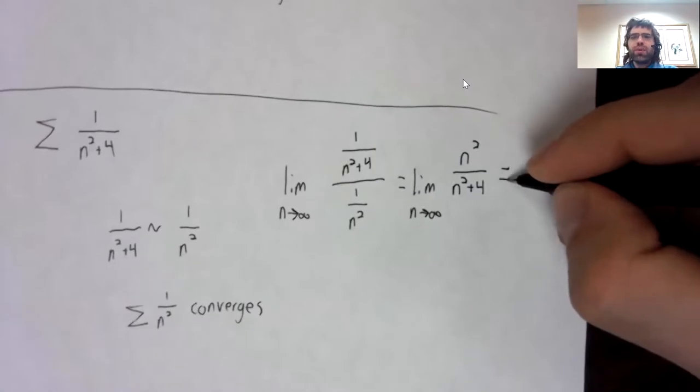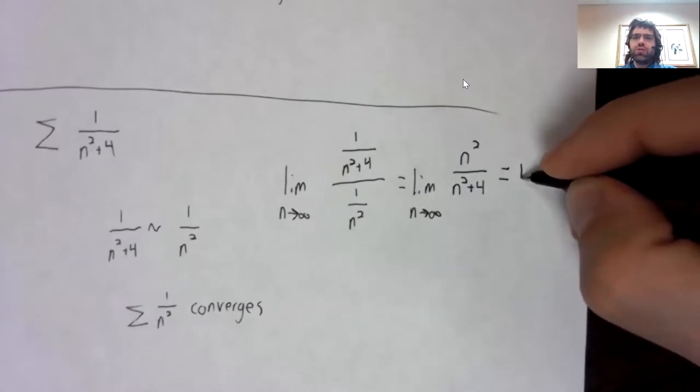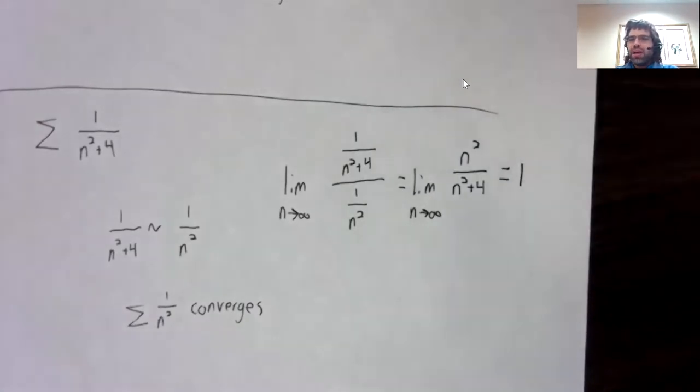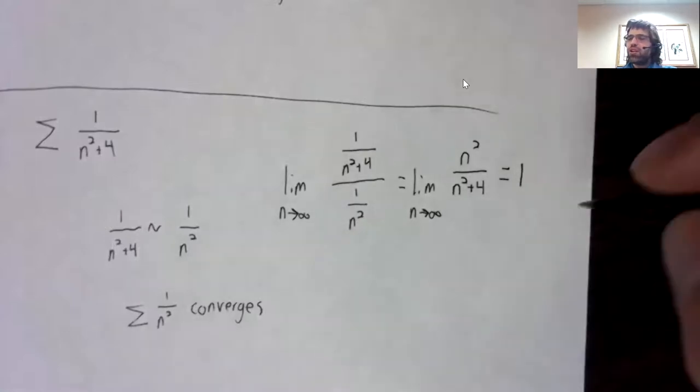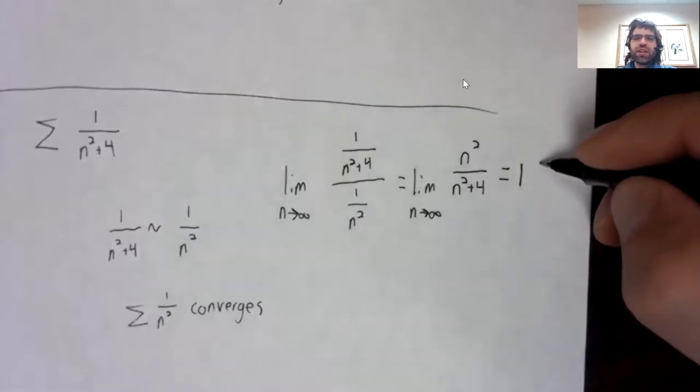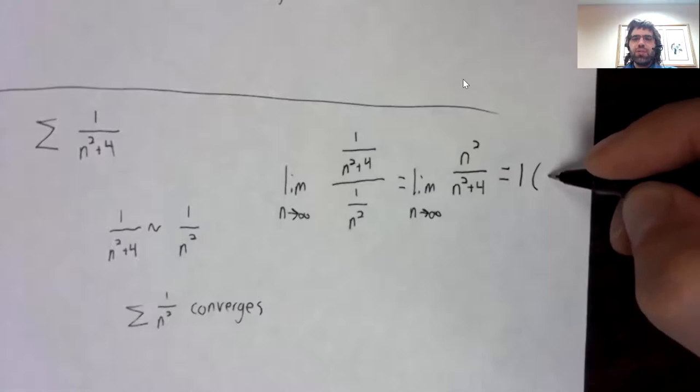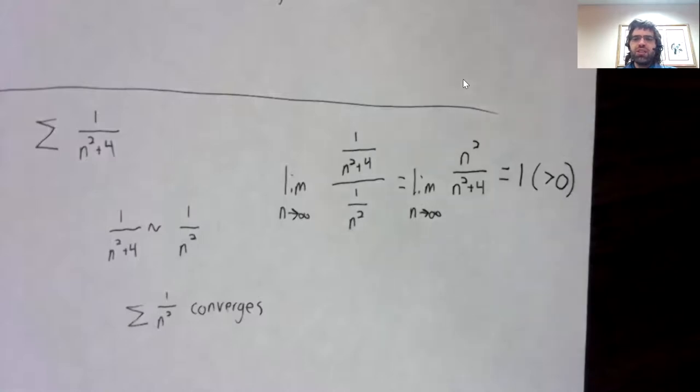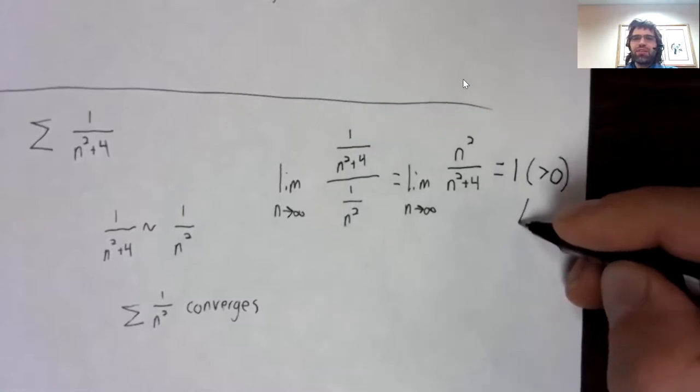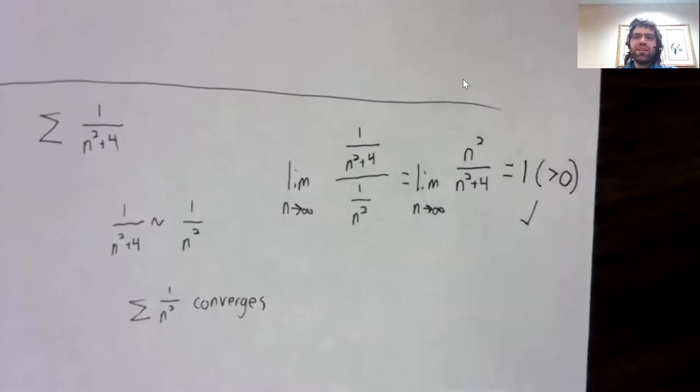This limit is one. You can use L'Hôpital's rule to show that. And if this were the ratio test, one would be a failure state. For the limit comparison test, what we wanted was to get a finite positive limit, and that's exactly what we did get.